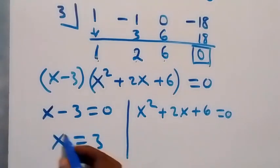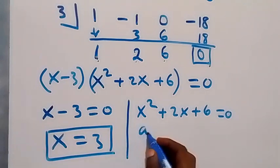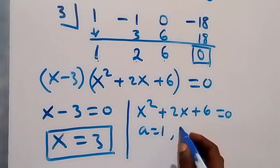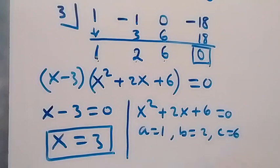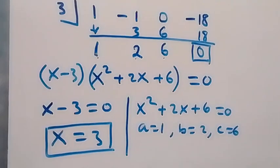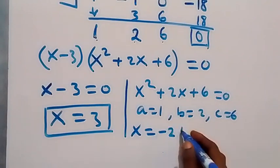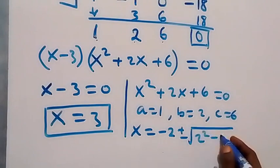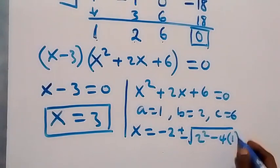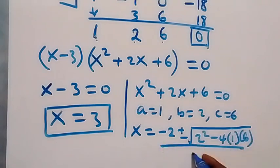For x² + 2x + 6 = 0, we use the quadratic formula where a = 1, b = 2, and c = 6. So x = (-b ± √(b² - 4ac)) / 2a = (-2 ± √(4 - 24)) / 2.